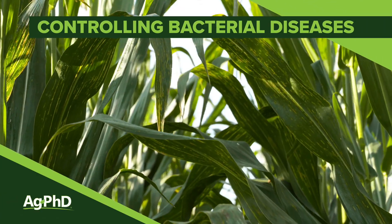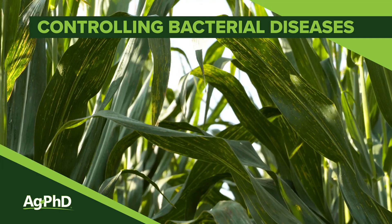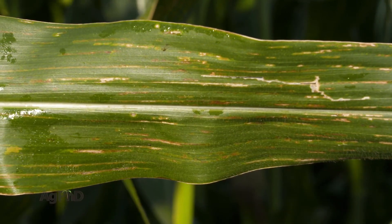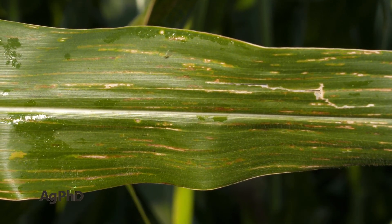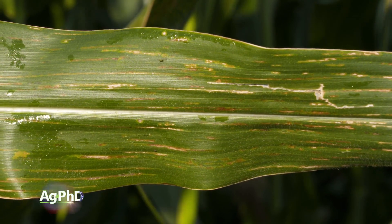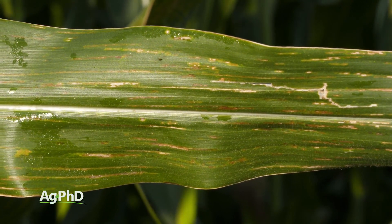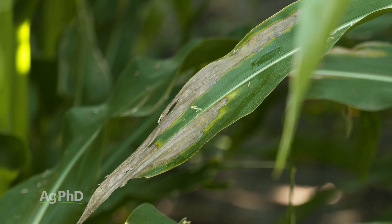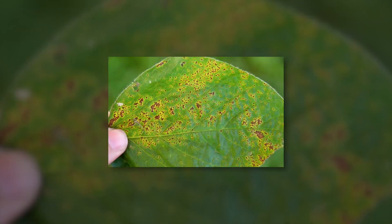Fungal diseases can be difficult to control, but bacterial diseases are even more so. We're going to talk about bacterial diseases in corn, soybeans, and wheat. Here's the unfortunate part: when we talk about fungal diseases, we can control those because we have fungicides. With bacteria, we'd have to have a bactericide.